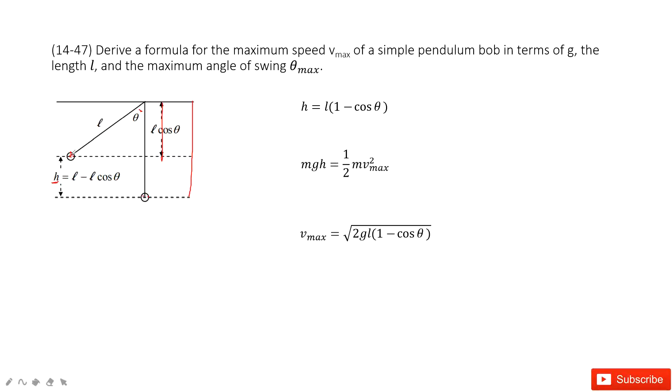We can see at the initial position, there is only potential energy. At the final position, only kinetic energy. The energy is conserved. So initial potential energy equals the final kinetic energy.